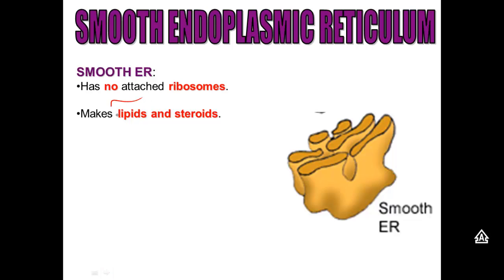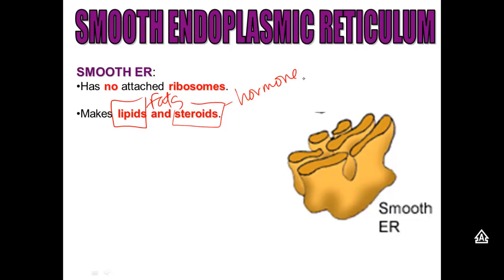Instead, the smooth ER makes fats, which we also call lipids. And it also makes steroids. Steroids are things like hormones — estrogen, testosterone. A steroid is also a type of fat.